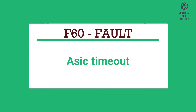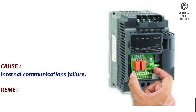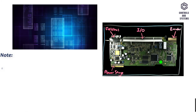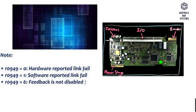F60 Fault: ASIC Timeout. Cause: Internal communications failure. Remedy: Check inverter. Fault appears sporadically. Note: R0949 equals 0: hardware reported link fail. R0949 equals 1: software reported link fail. R0949 equals 6: feedback is not disabled for reading inverter data.